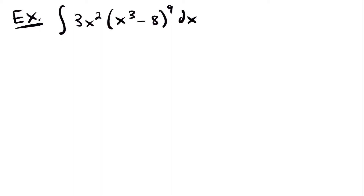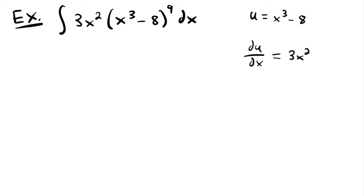It's a good choice because when you take the derivative of a cubic function, you get a squared function. You want to find a function whose derivative can also be found somewhere else in your integral. So we'll set u equal to x cubed minus 8. Taking the derivative: du/dx equals 3x squared, since we multiply 3 down and subtract 1 from the exponent, and the derivative of negative 8 is 0. Multiplying both sides by dx, du equals 3x squared dx.